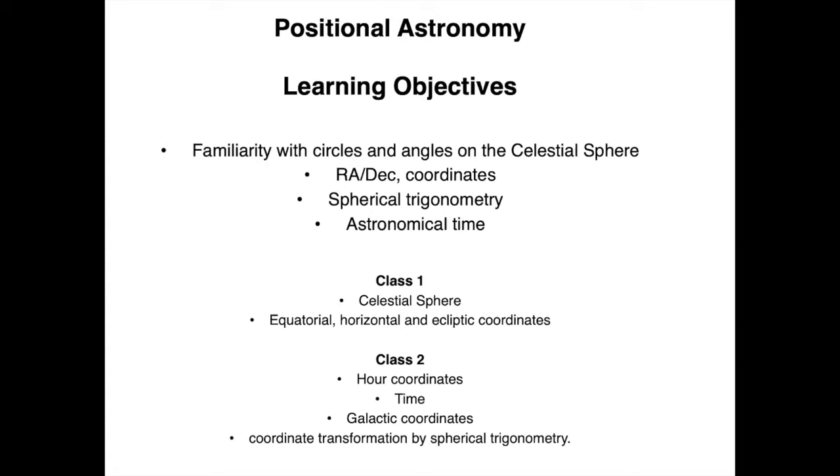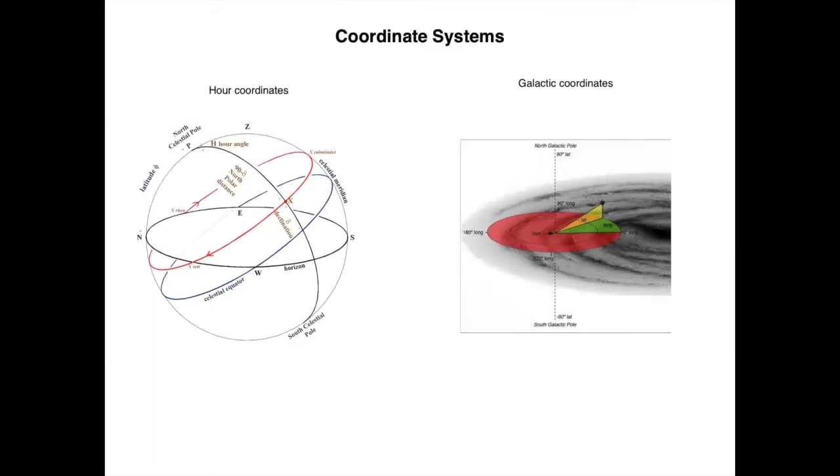Now in this class we're going to look at other coordinate systems, hour coordinates and galactic coordinates, and we're going to find out how to do the coordinate transformation between them. The two last coordinate systems are the hour coordinate system and the galactic coordinate system. So let's go through these last ones in detail.